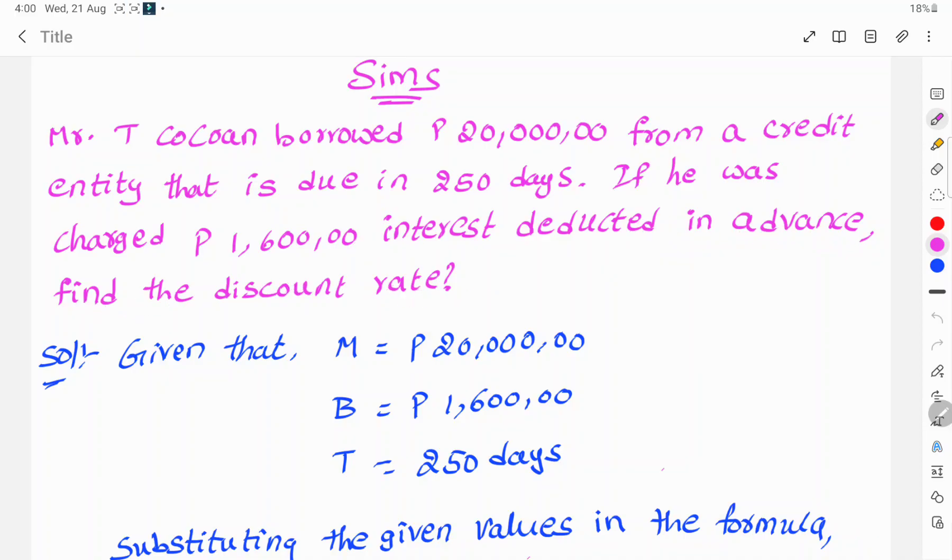So, let's see the solution. Given that M equals 20 lakhs, B equals 1 lakh 60,000, and T equals 250 days.